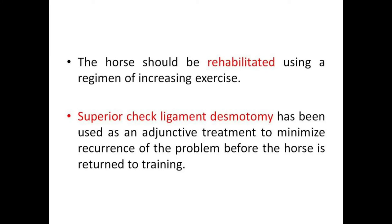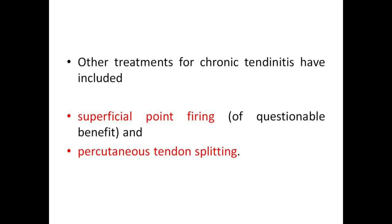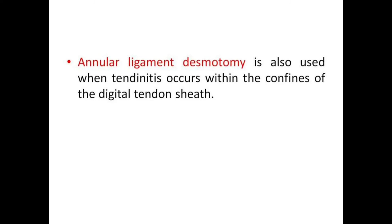The horse should be rehabilitated using a regimen of increasing exercise. Superior check ligament desmotomy has been used as an adjunctive treatment to minimize recurrence of the problem before the horse is returned to training. Other treatments for chronic tendinitis have included superficial point firing, which is of questionable benefit, and percutaneous tendon splitting. Annular ligament desmotomy is also used when tendinitis occurs within the confines of the digital tendon sheath.